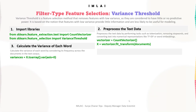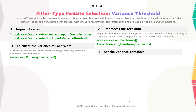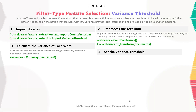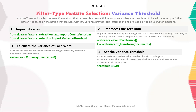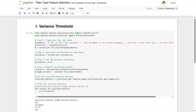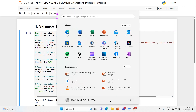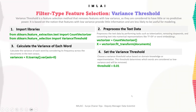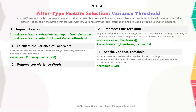Step four is to set the variance threshold. Choose a variance threshold value based on domain knowledge or experimentation. This threshold determines which words are considered low variance and will be removed. Based on domain knowledge and experimentation, we set the threshold to 0.01.